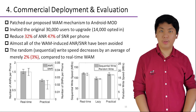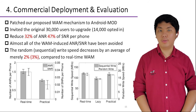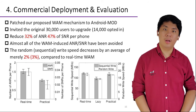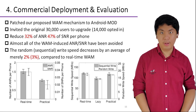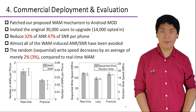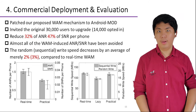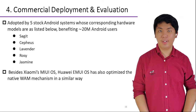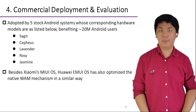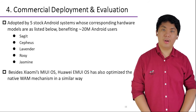We implemented our solution as a lightweight patch to the system and evaluated its performance in the wild. The original 30,000 users were invited to install the patch and 14,000 of them opted in. As a result, our solution reduces 32% of ANR events and 47% of SNR events — almost all WAM-incurred ANR and SNR have been avoided. Compared to the real-time WAM in Android, we incurred only a 3% decrease in data write speed. Given the effectiveness in improving system responsiveness, Xiaomi further adopted the solution in five of its stock Android systems, benefiting around 20 million Android users.